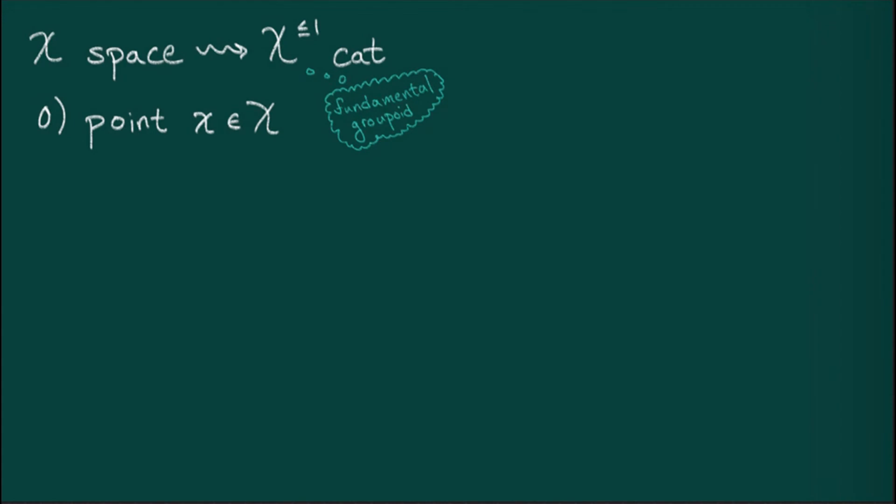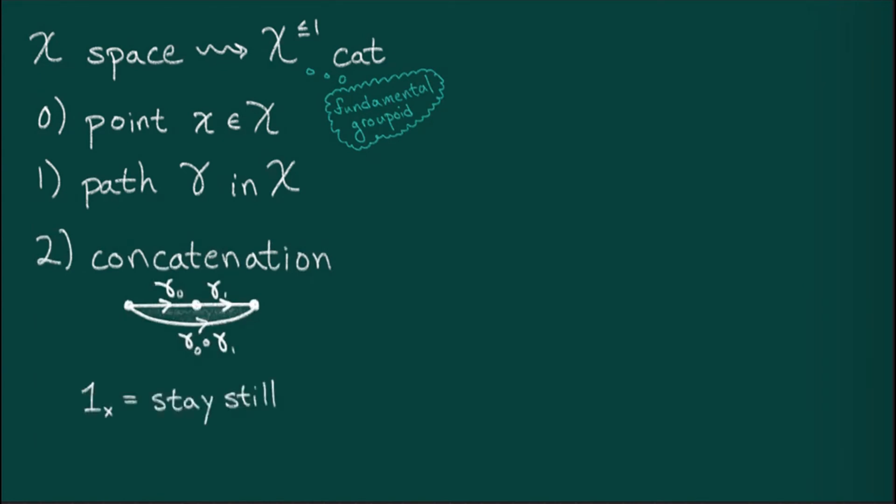A map will be a directed path in x, which connects two points. Composition will be a concatenation of paths.